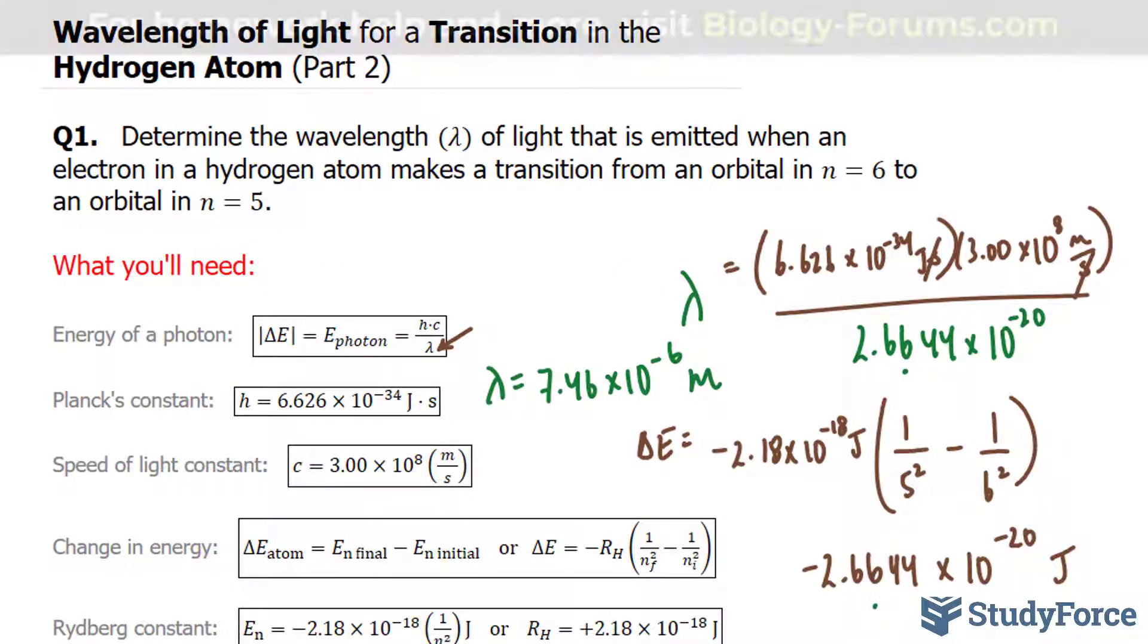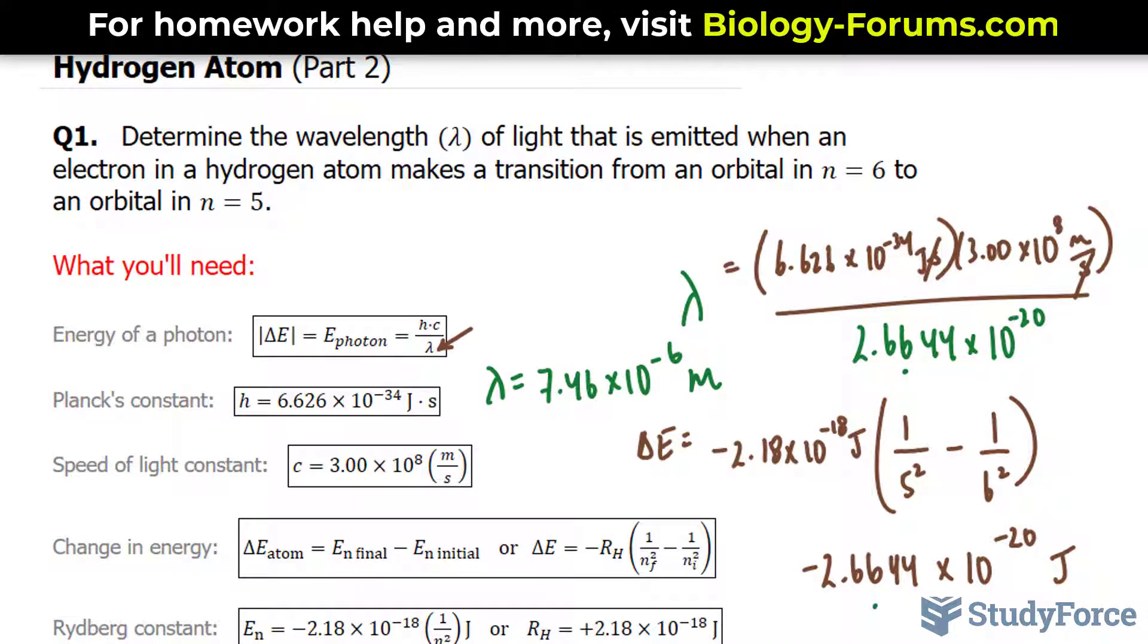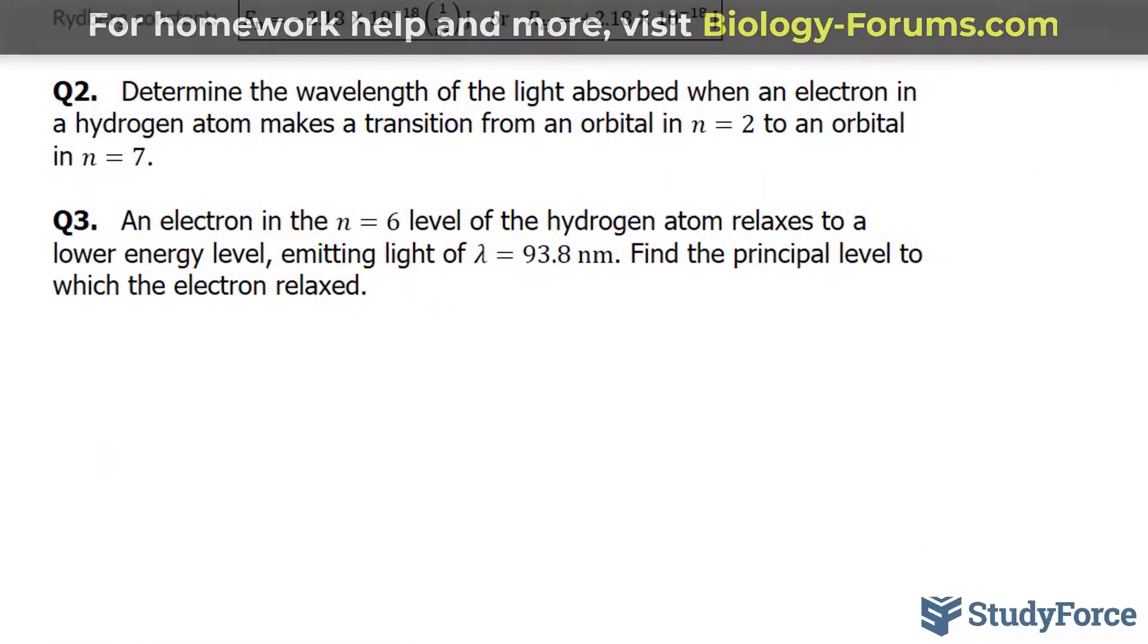In part 2 of this lesson, where we find the wavelength of light for a transition in the hydrogen atom, we ended off with questions 2 and 3.